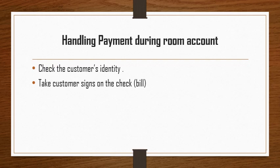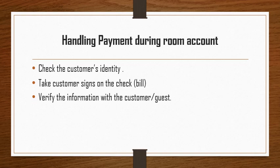Second, take the customer's signature on the check or bill — ask the customer to sign and also to write their room number. Third, verify the information with the customer or guest, meaning you verify the guest's information with the front office staff or check in the PMS (Property Management System) software, where you will already have the details of guests staying in the hotel. Then hand over all the bills to the cashier. If the customer asks for a bill, give them a copy, or immediately post the bill to the guest room account.